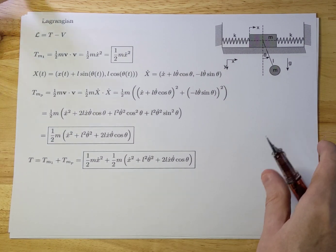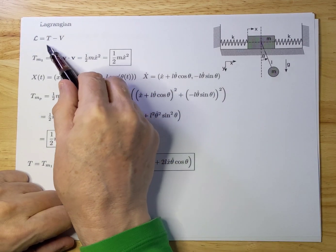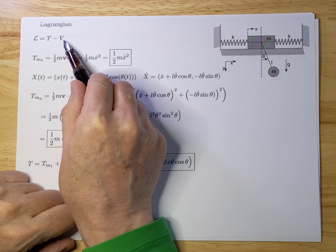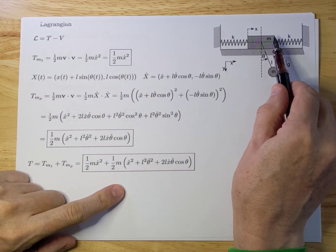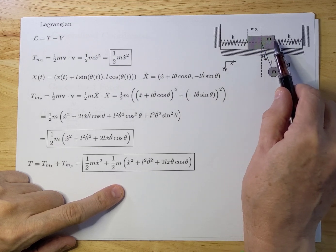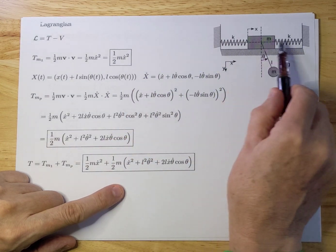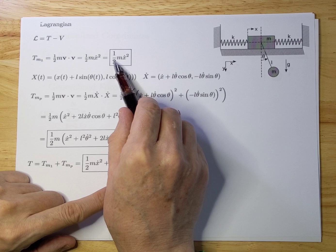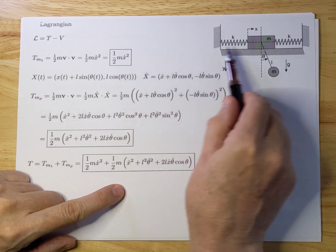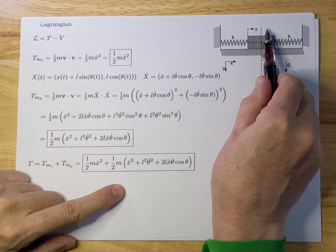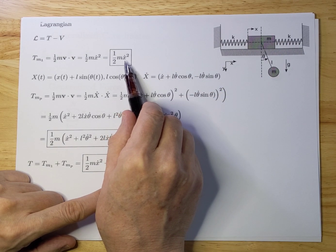That brings us to the Lagrangian. The Lagrangian is a combination of the kinetic energy T and the potential energy V. Let's start with the kinetic energy of the mass on top that moves back and forth on the table. That's only determined by the speed of this mass in a half m v squared type of way, so you immediately get one-half m x-dot squared.